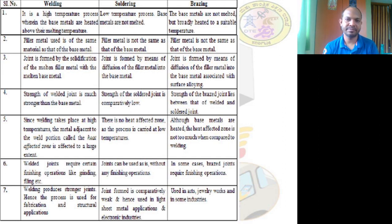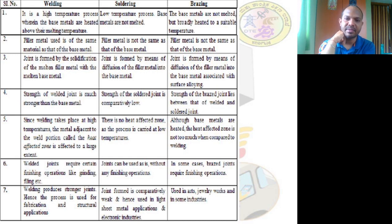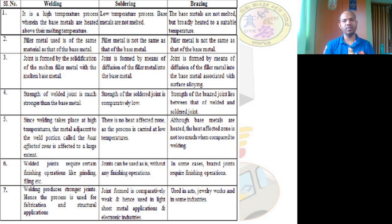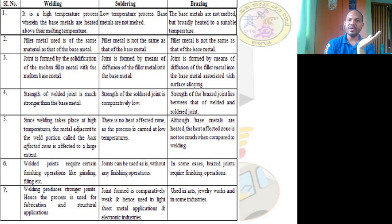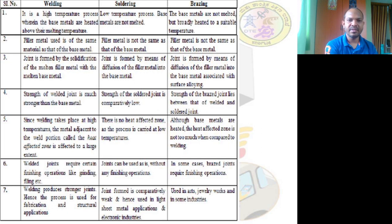The strength of the soldered joint is comparatively low. The strength of the brazed joint lies between that of the welded and soldered joints. In summary: lowest strength is soldering, second is brazing, and highest is welding.